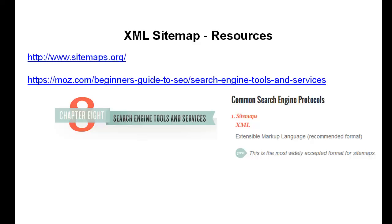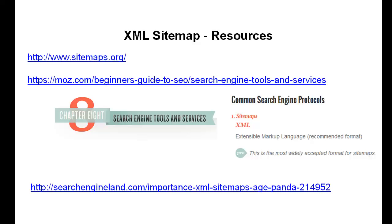If you jump to chapter eight on the particular URL shown here, you'll see it starts off with common search engine protocols, and the first topic it talks about is sitemaps. Out of the different permutations of sitemaps, XML — which stands for Extensible Markup Language — is the recommended and most widely accepted format for sitemap strategies for search engines. There's also another popular place called Search Engine Land dot com for learning advanced theories.